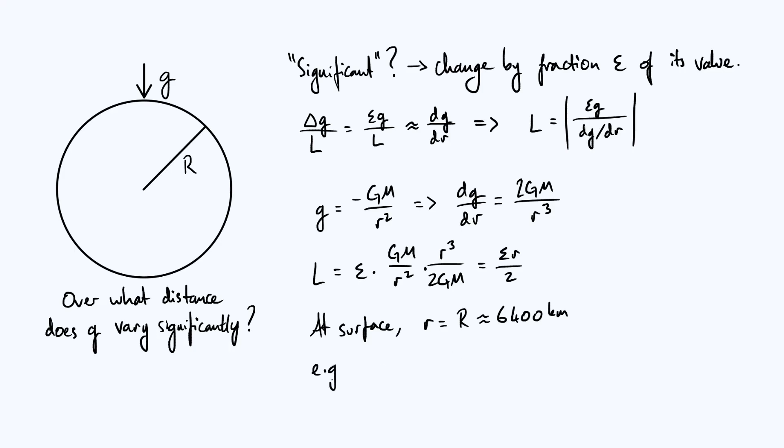I would say maybe if g varies within about a percent of its value, unless you're doing super super precise experiments, then maybe it's reasonable to consider that g is constant over that length scale. So let's take epsilon to be 0.01, corresponding to 1 percent.